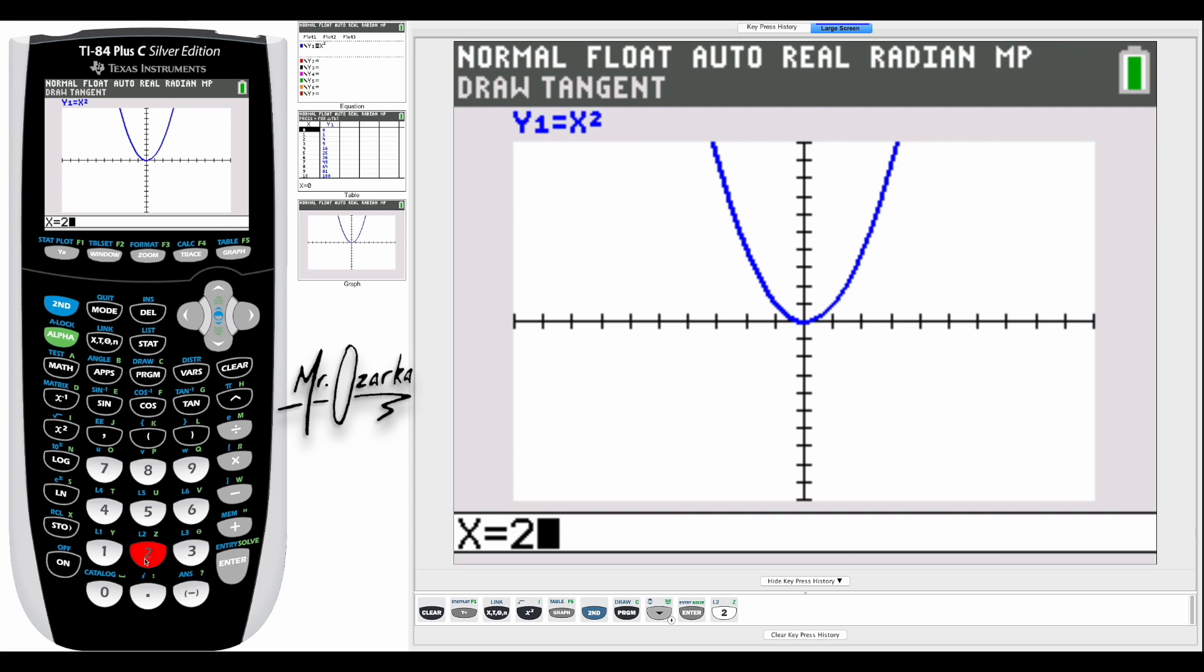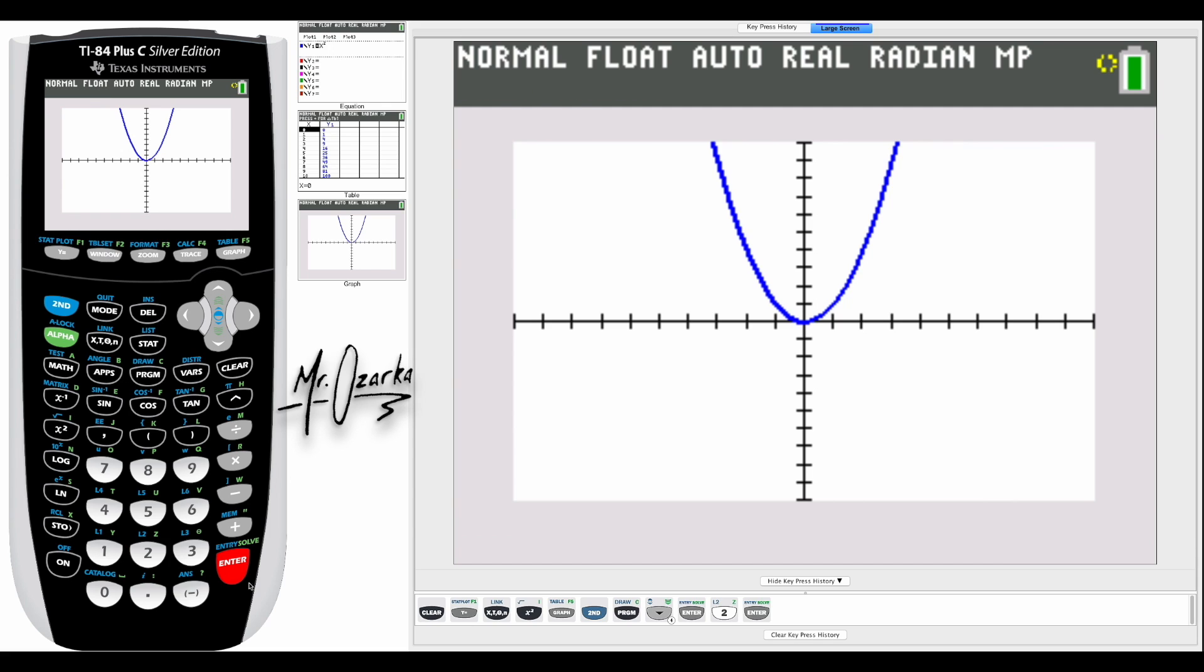So I'm going to click two and hit enter. If you notice, it draws the tangent line on the graph and gives you the equation of that tangent line. So at x equals two for the function x squared, the equation of a tangent line is y equals 4x minus 4.